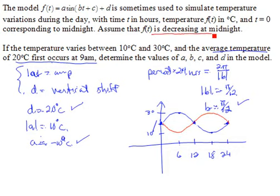we're having the proper behavior at midnight. Remember that the temperature was supposed to be decreasing at midnight, and now that's happening because I've chosen a value of a to be negative 10.